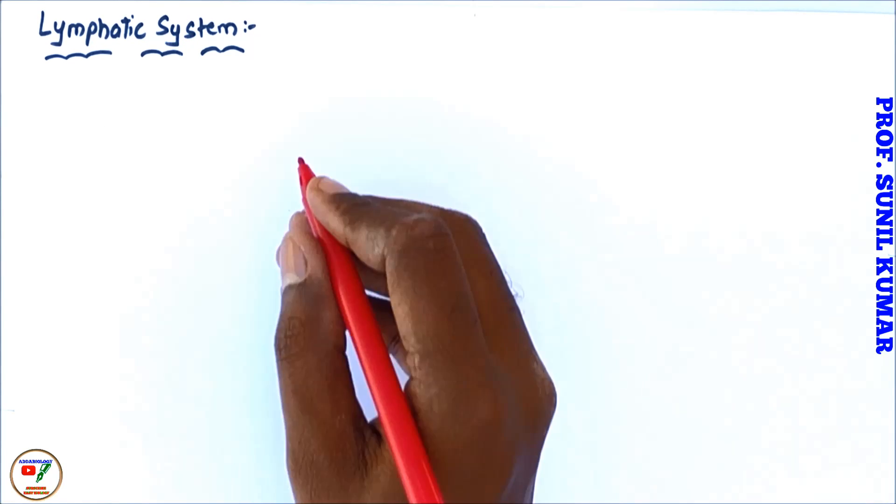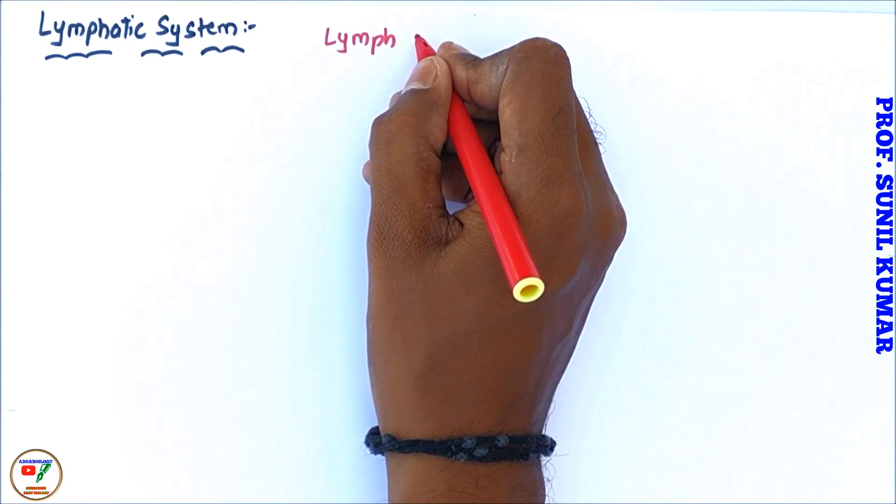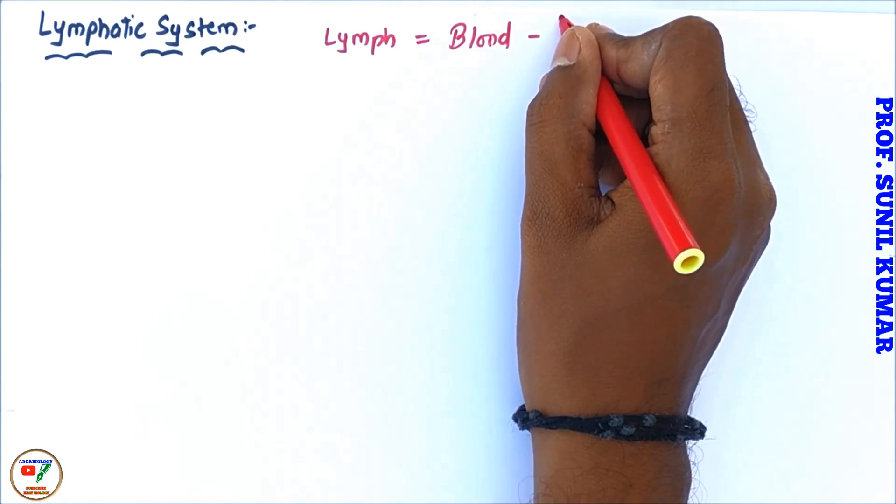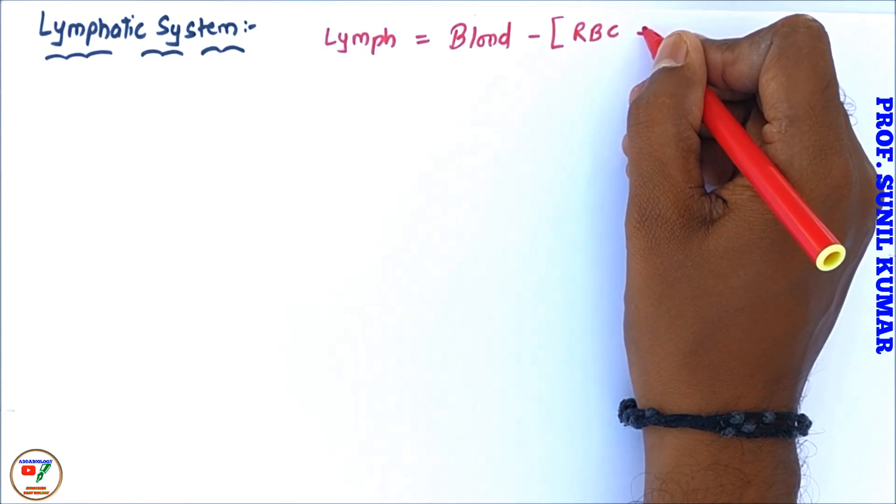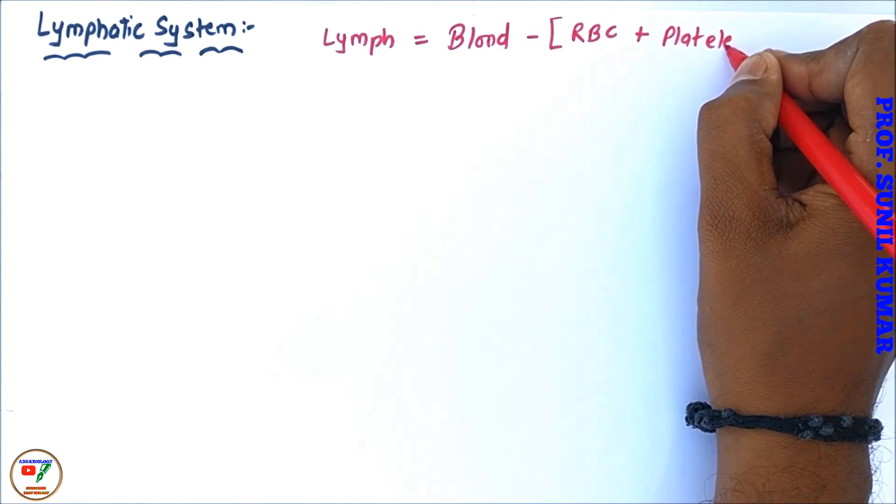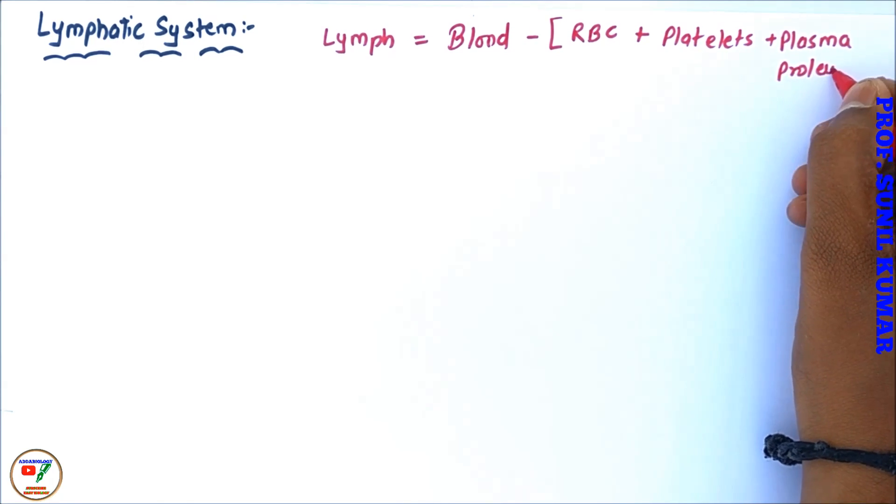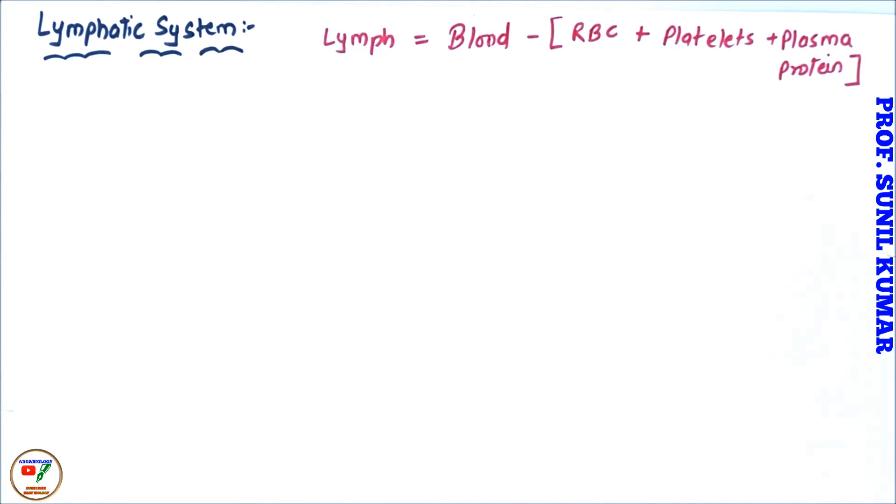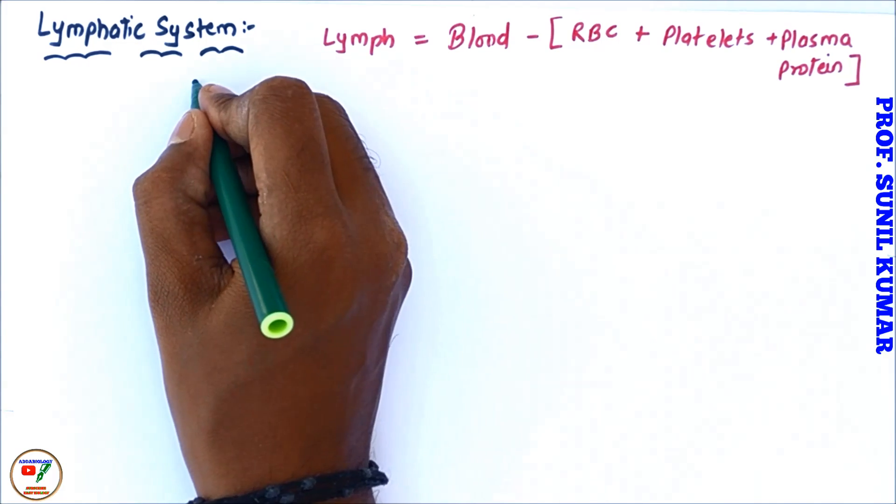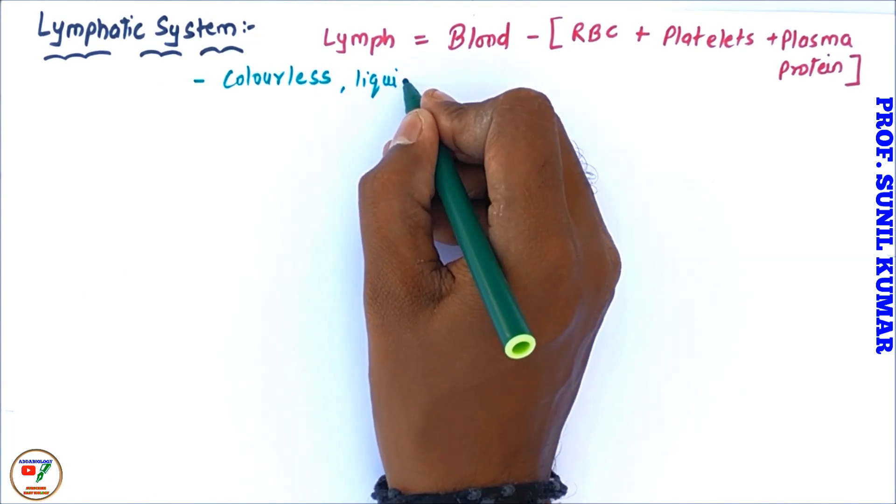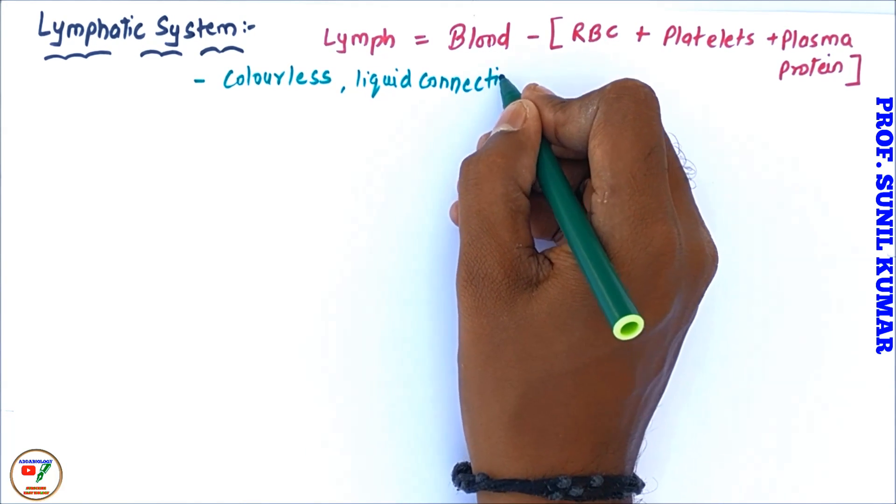First of all, we need to understand the meaning of the word lymph. Lymph is basically equal to blood minus RBC plus platelets plus plasma proteins. It means from blood you remove all these components: RBC, platelets, and plasma protein. Whatever is left behind is called lymph.